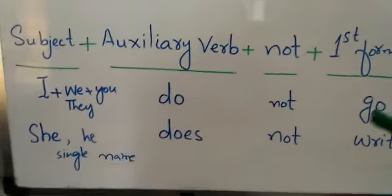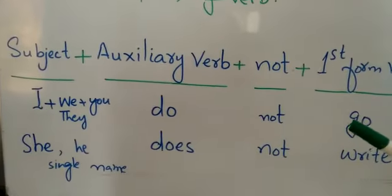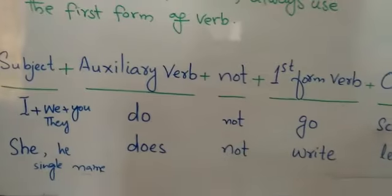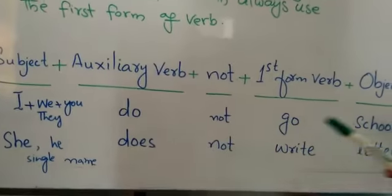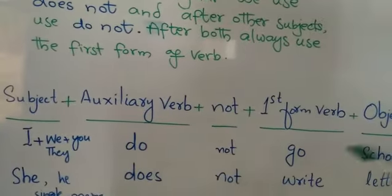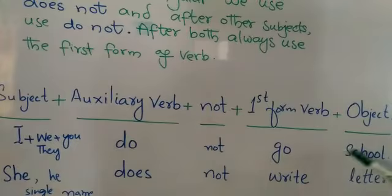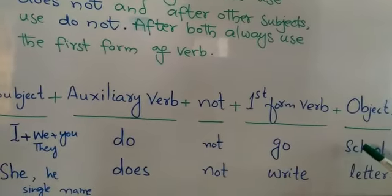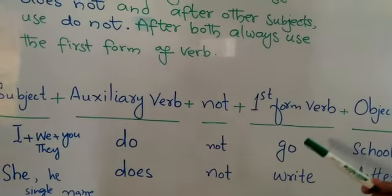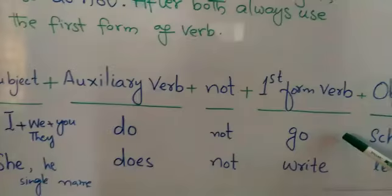Subjects I, we, you, they use 'do not'. For example: I do not go to school. We do not go to school. You do not go to school. With these subjects, we use only 'do' and the first form of verb.